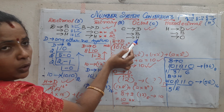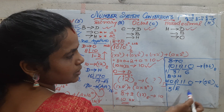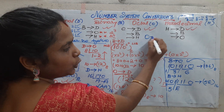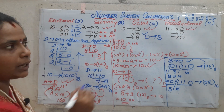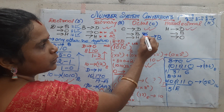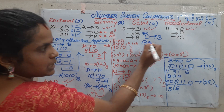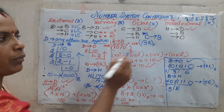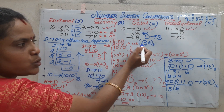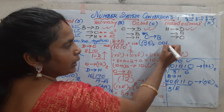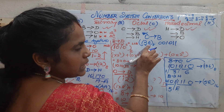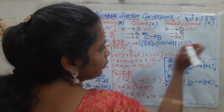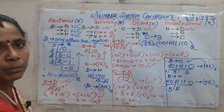Now we move on to octal to binary and octal to hexa. For octal to binary: we take 136 base 8. Whenever you have an octal number and want to write it in binary, write each digit in terms of 3 binary bits. So 1 is 001, 3 is 011, 6 is 110. You should know the binary equivalents of numbers 0 to 15 thoroughly. You can check — the answer matches correctly.